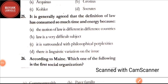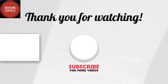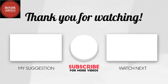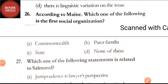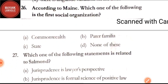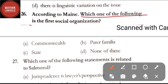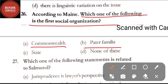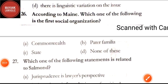So here we will end the first video of this jurisprudence MCQ series. Welcome back for the second video. Let's get started from question number 26. According to Maine, which one of the following is the first social organization — option A: commonwealth; option B: Pater Familias; option C: state; option D: none of these. The correct answer is option B, Pater Familias is the first organization according to Maine.